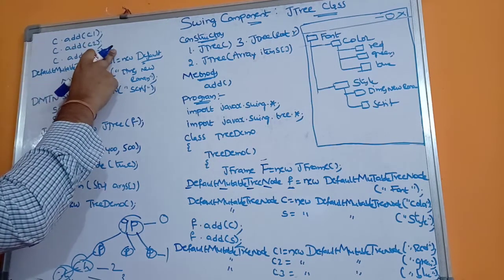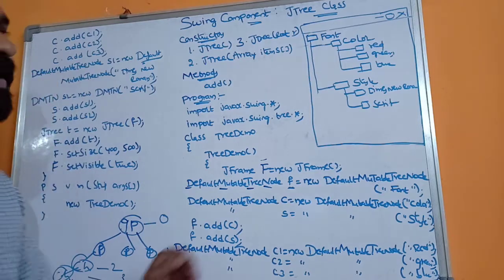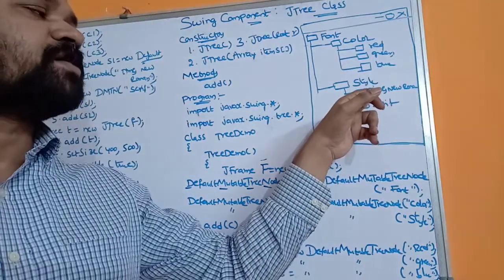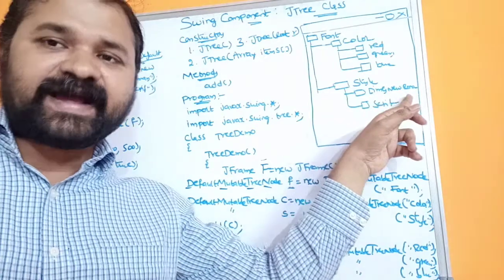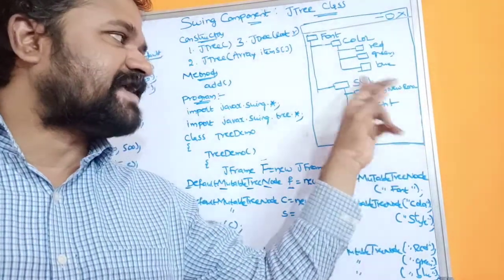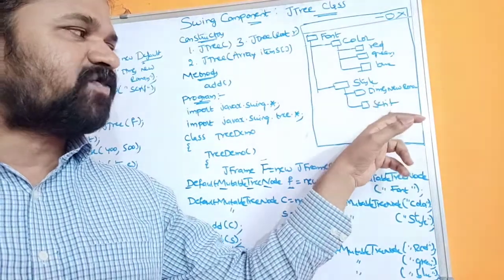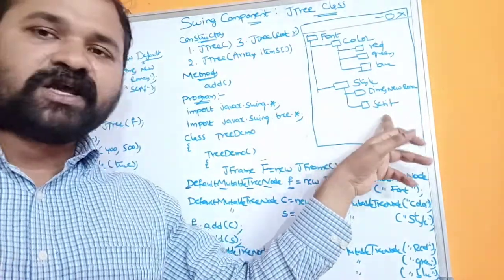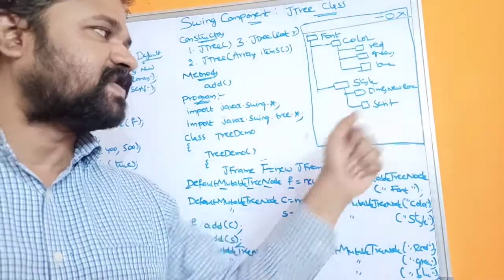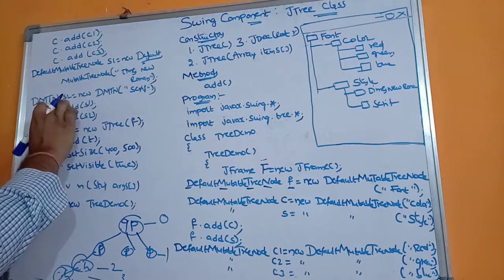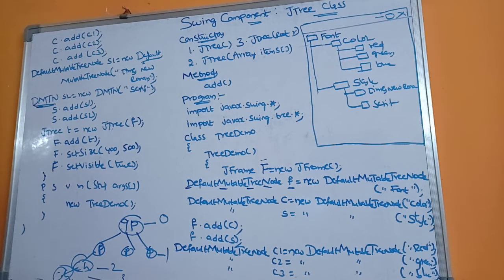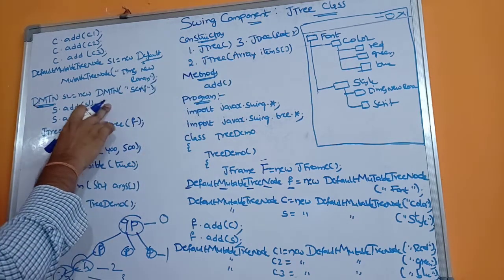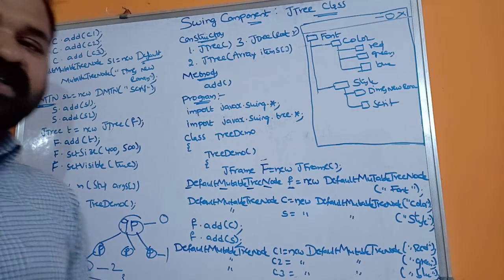Next, we create children for the style node. DefaultMutableTreeNode s1 = new DefaultMutableTreeNode("Times New Roman") — Times New Roman is the node, s1 is the object. DefaultMutableTreeNode s2 = new DefaultMutableTreeNode("serif") — s2 is the object. For space constraints, DMTN stands for DefaultMutableTreeNode. Then s.add(s1) and s.add(s2) add Times New Roman and serif to the style node. With this, our tree structure is created.